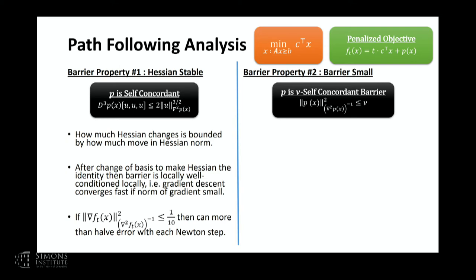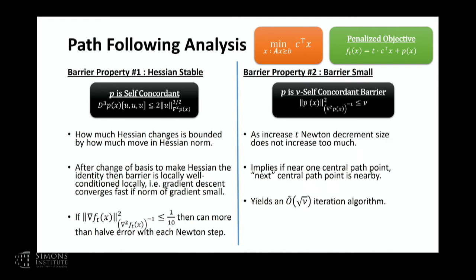The second property is that the total force exerted by the barrier is not too large — the barrier is stable in terms of how much it pushes you. This scary-looking expression is exactly the Newton decrement from the earlier talk. The analysis Alexander showed is that if the norm of the gradient of the barrier in the Hessian inverse norm is less than nu, then if we increase the path parameter t by an amount depending on nu — specifically a multiplicative factor of 1 plus 1 over square root nu — we can maintain that the Newton decrement stays small. Just having these two properties is enough to get a square root nu iteration algorithm.